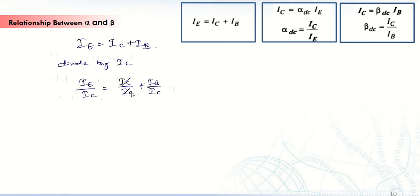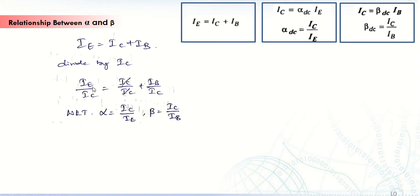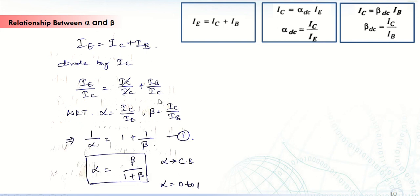Here IC divided by IC gets cancelled, and the remaining expression is IE divided by IC is equal to 1 plus IB divided by IC. We know that alpha equals IC divided by IE, so IE divided by IC becomes 1 by alpha. And since beta is IC divided by IB, IB divided by IC becomes 1 by beta.